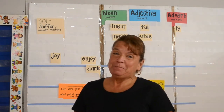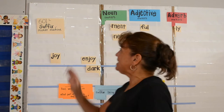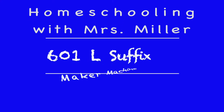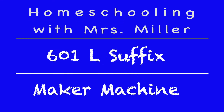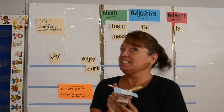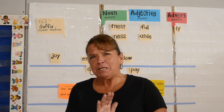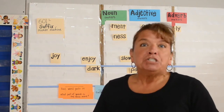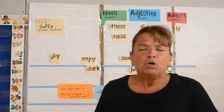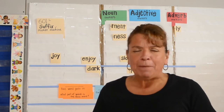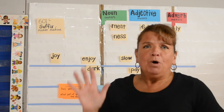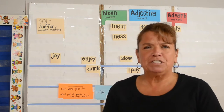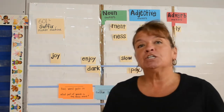Welcome back to Homeschooling with Mrs. Miller. Today's lesson is 601L, the suffix maker machine. This came to be because of a struggling student I was tutoring. This young gentleman had a really hard time with base words and suffixes, and no matter what we practiced, he just struggled. All of a sudden I came up with the suffix maker machine, and the visual part of it made so much sense to him — light bulbs came on. So I thought I'd share it with you today.